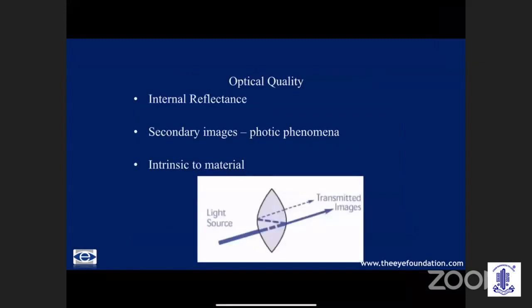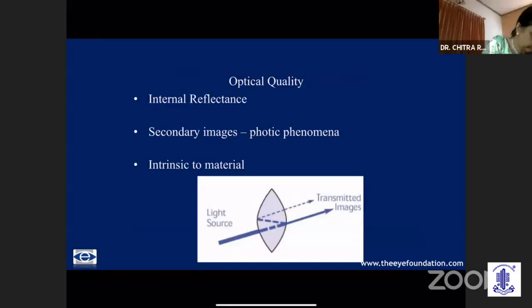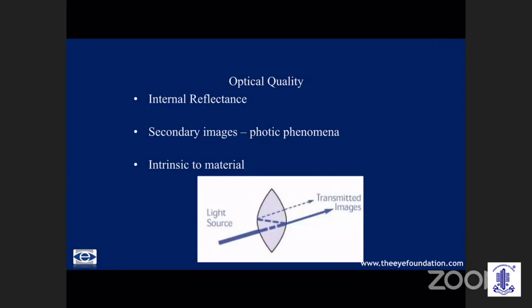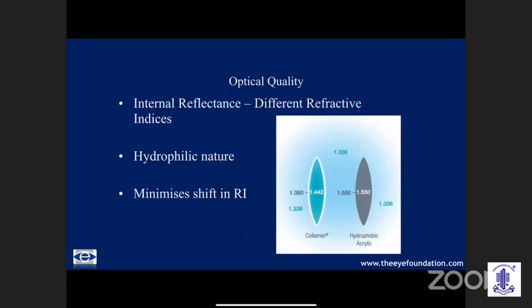One of the disadvantages of placing an implant in the eye might be that the internal reflectance would result in secondary images and photopic phenomena such as glare and halos. However, the internal reflectance of the Collamer is the same as the crystalline lens, and it does not result in an excessive amount of glare and halos post-operatively, which is not the case in ablations following keratorefractive procedures.